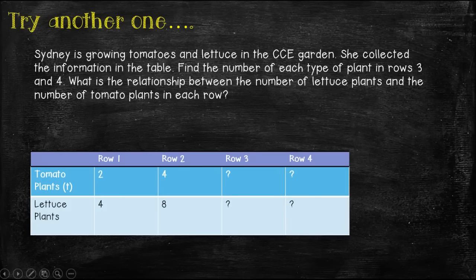Let's try another one. Sydney is growing tomatoes and lettuce in the Clear Creek Elementary garden. She collected the information in the table below. Find the number of each type of plant in rows three and four. What is the relationship between the number of lettuce plants and the number of tomato plants in each row? Let's take a look at our table down here. We see in row one, she has two tomato plants for every four lettuce plants.